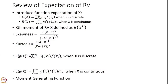We introduced the expectation of a random variable x. In the case of a discrete random variable, we defined the expected value of x as a summation from i to infinity of xi multiplied by f, the probability mass function of xi. In the case of a continuous random variable, we define it as an integral from minus infinity to infinity of x multiplied by the probability density function of x, dx.